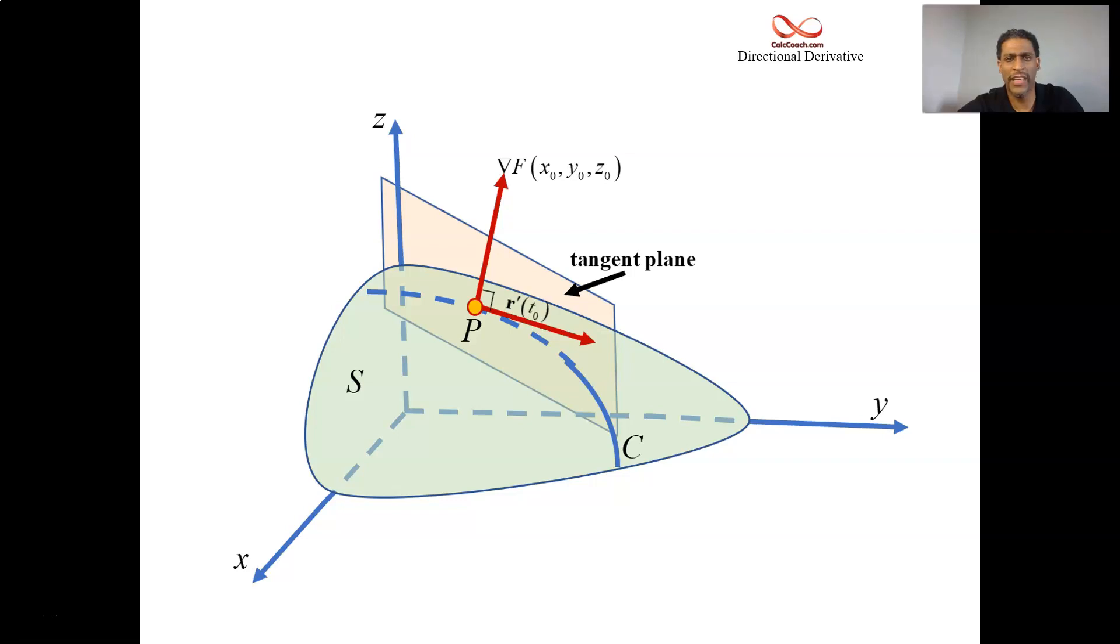Hello, welcome to this video where we look at the connection between a tangent plane and the gradient vector. We've seen how the gradient vector is used for directional derivatives, that the direction of maximum increase happens in the direction of the gradient, and that the gradient is orthogonal to every level curve. Now we're going to see the connection between the tangent plane and the gradient.